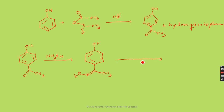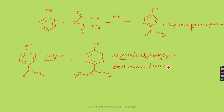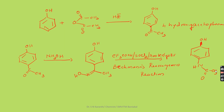The ketoxime undergoes Beckmann's rearrangement in the presence of trifluoroacetic acid, thionyl chloride, and the catalyst Amberlyst-15, producing paracetamol. The NH group is rearranged, and the CO group is repositioned — a rearranging reaction takes place to produce paracetamol.